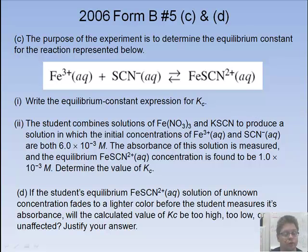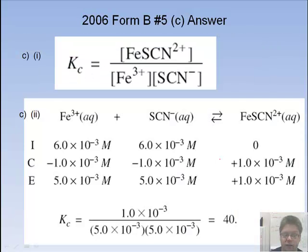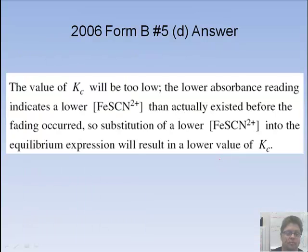So the solution for this, remember letters C and D. There's your equilibrium constant. You have to use an ICE table. Solve for your Kc. Kc equals 40. That's part two. D, the value of Kc will be too low. The lower the absorbance reading indicates a lower iron thiocyanate than actually existed before the fading occurred. So the substitution of lower FeSCN into the equilibrium expression will result in a lower value of Kc. The Kc will be too low because of that lower concentration plugged into the equilibrium expression.